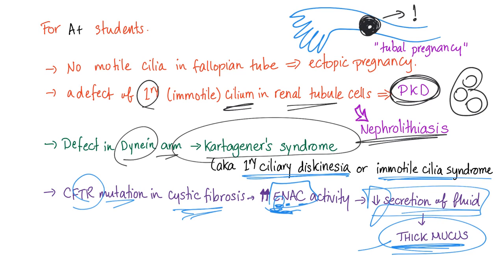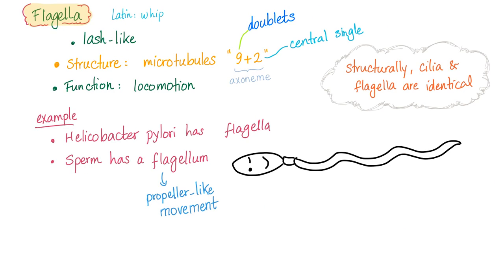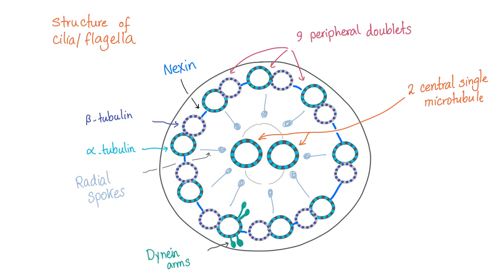Microtubules can also form flagella — Latin for whip or lash-like. The structure is again 9+2: nine peripheral doublets and two central single microtubules. Their function is locomotion. Examples include Helicobacter pylori bacteria and sperm, which use a flagellum for propeller-like movement. Structurally, cilia and flagella are identical. The nine peripheral doublets are connected by dynein arms and nexin. Each doublet consists of an A-tubule and B-tubule (alpha- and beta-tubulin). Radial spokes connect them to the central pair.